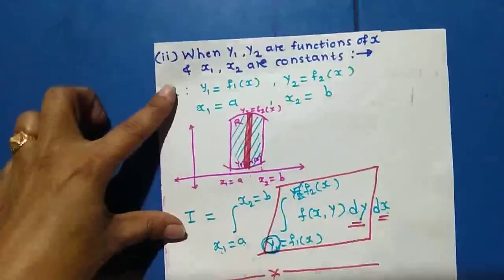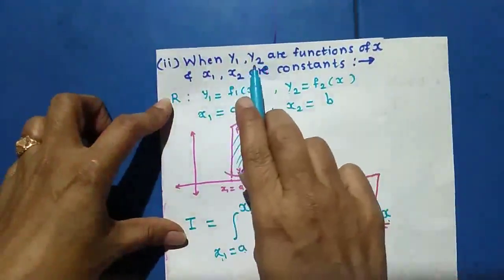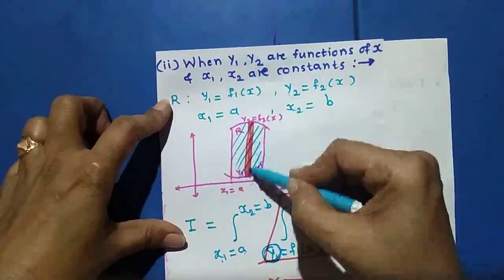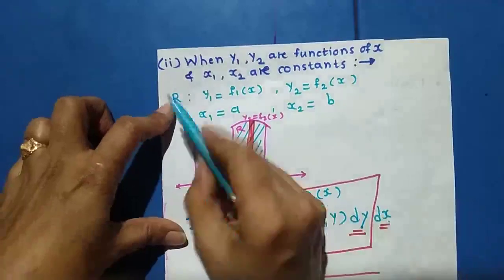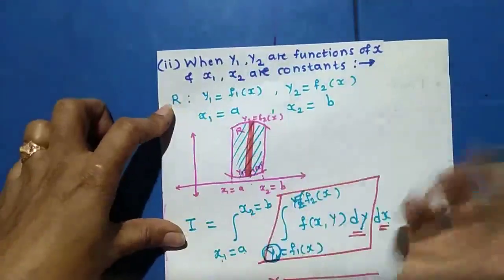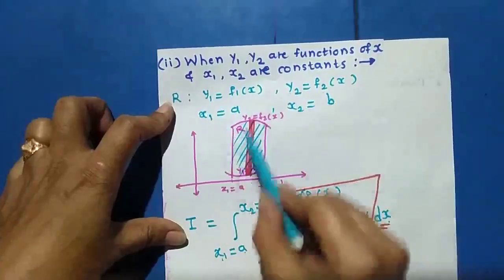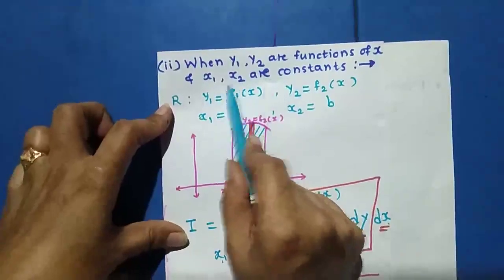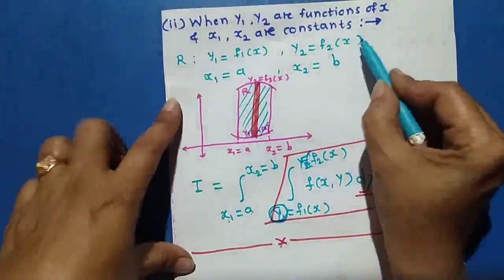Now I explain Case 2: when the limits of y are functions of x. When limits of y are functions of x, we take a strip parallel to the y-axis — that is, a vertical strip. Here region R is bounded by y1 = f1(x) and y2 = f2(x), so y1 and y2 are functions of x. The limits of x are constant, so x1 = a and x2 = b.